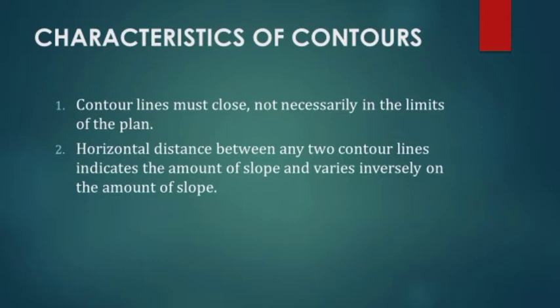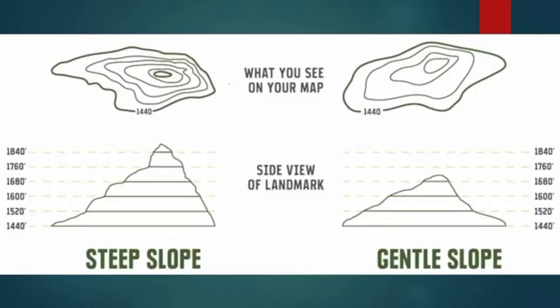Second: the horizontal distance between any two contour lines indicates the amount of slope and varies inversely with the amount of slope. If two contour lines are closer together, it means a steep slope. If the lines are far apart, it will be a gentle slope — that is what is meant by the inversely proportional relation.